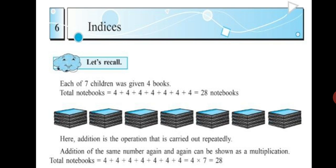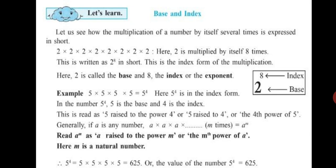What if we are asked to multiply a same number by itself? Let's learn base and index. Let us see how the multiplication of a number by itself several times is expressed in short. Here 2 is multiplied by itself 8 times. This is written as 2 raised to 8 in short — this is the index form. Here 2 is called the base and 8 is the index or the exponent.